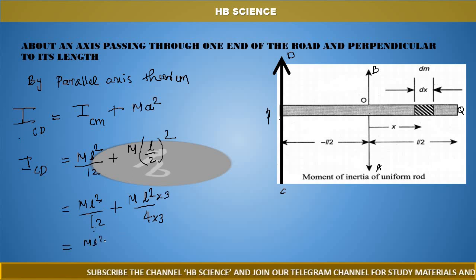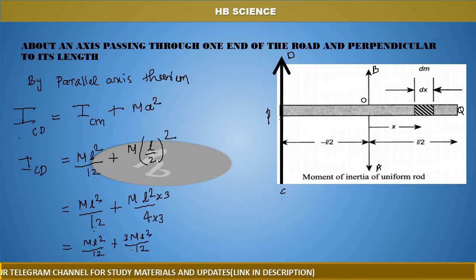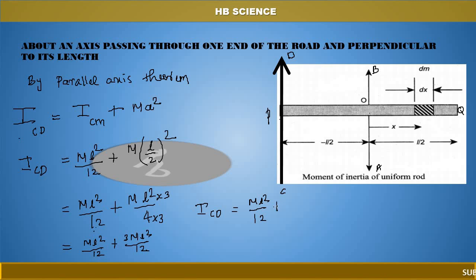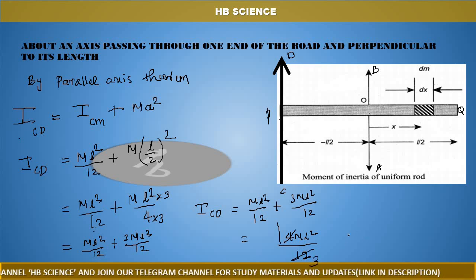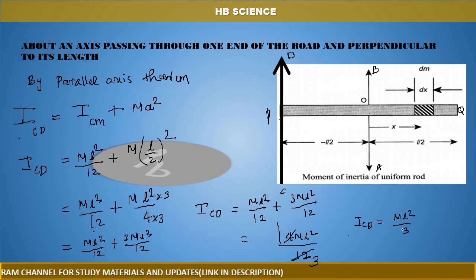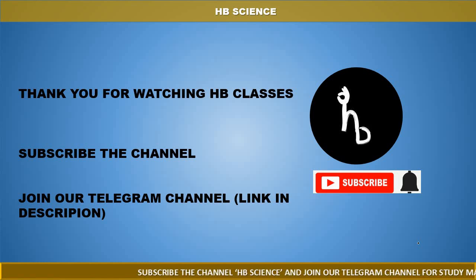ICD equals ML squared by 12 plus M times L squared by 4, which is ML squared by 12 plus 3ML squared by 12, giving 4ML squared by 12. Therefore ICD equals ML squared by 3. So the moment of inertia of a uniform rod about an axis passing through one end is ML squared by 3. Thank you for watching. Please subscribe to our channel and join the Telegram channel link in the description for study material.